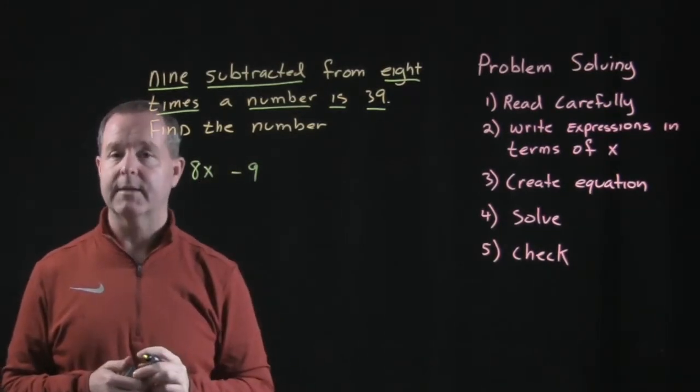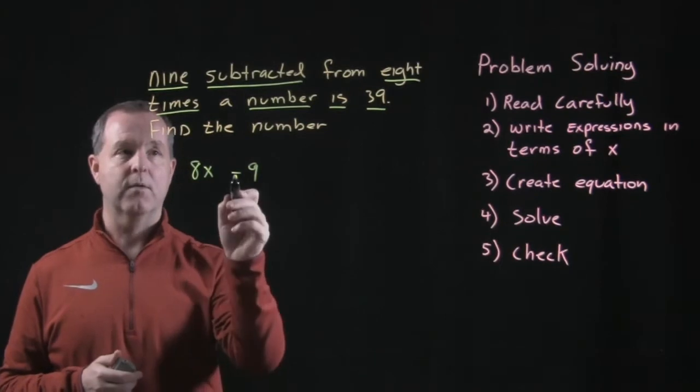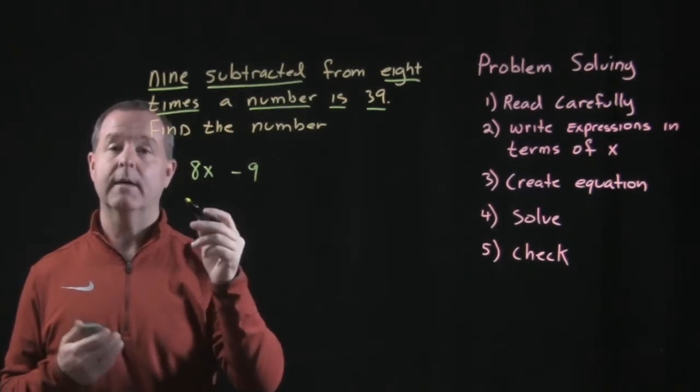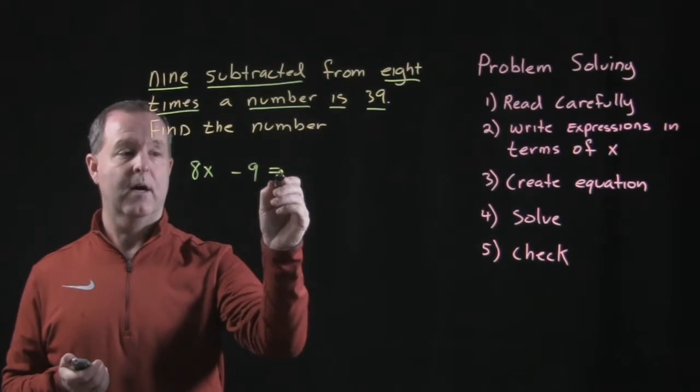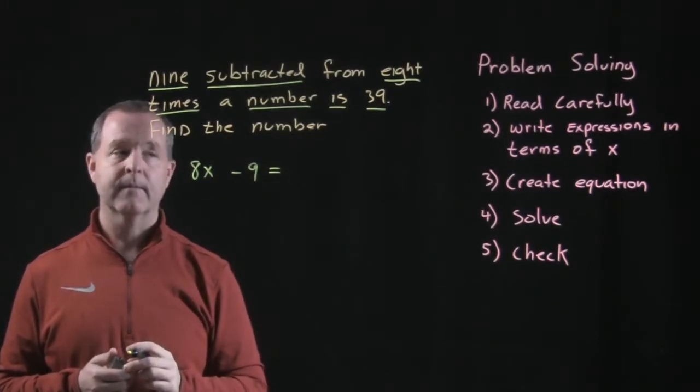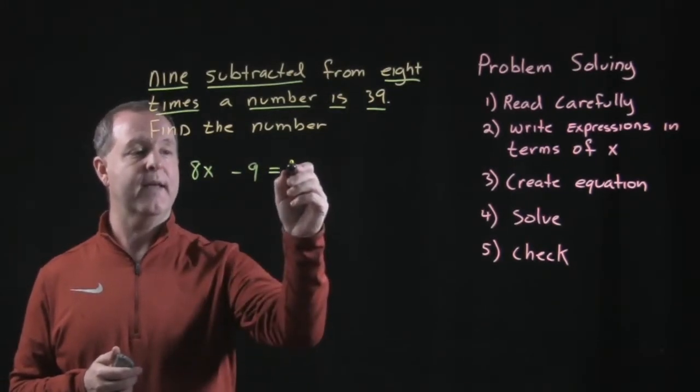So 9 subtracted from 8 times a number is - always means equal. And in this particular case, we are given that it equals 39.